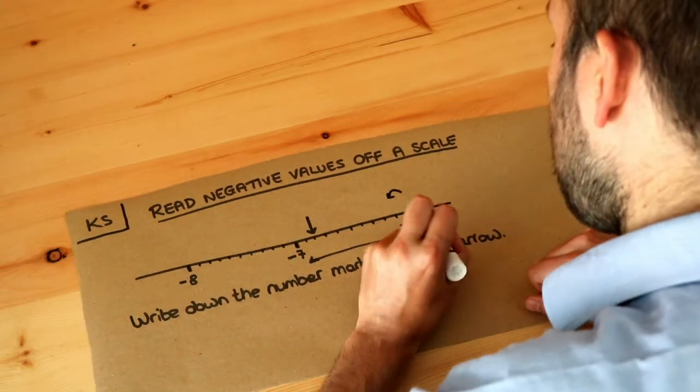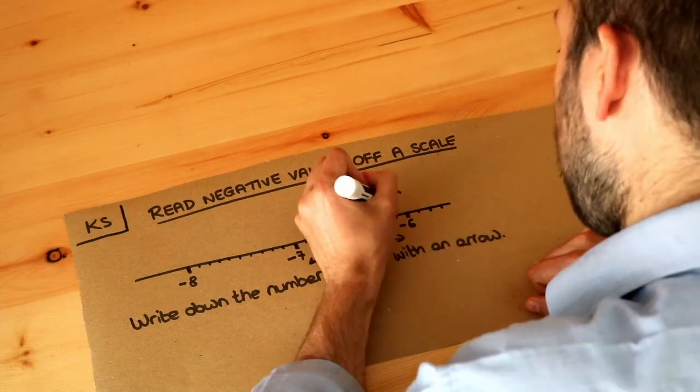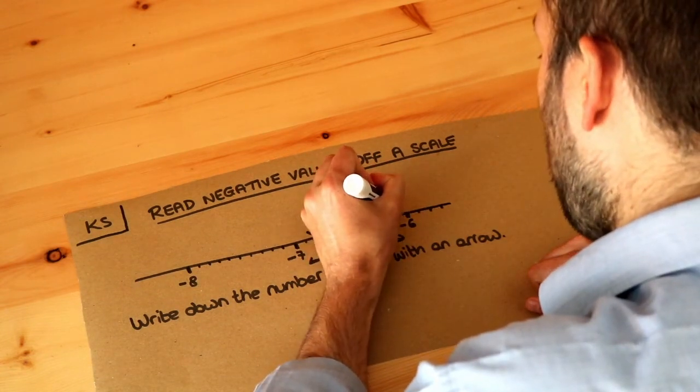So as we go from right to left because we have negative numbers, we go from right to left rather than left to right. If that's minus six, then if we decrease it by a tenth, that's going to be minus six point one.